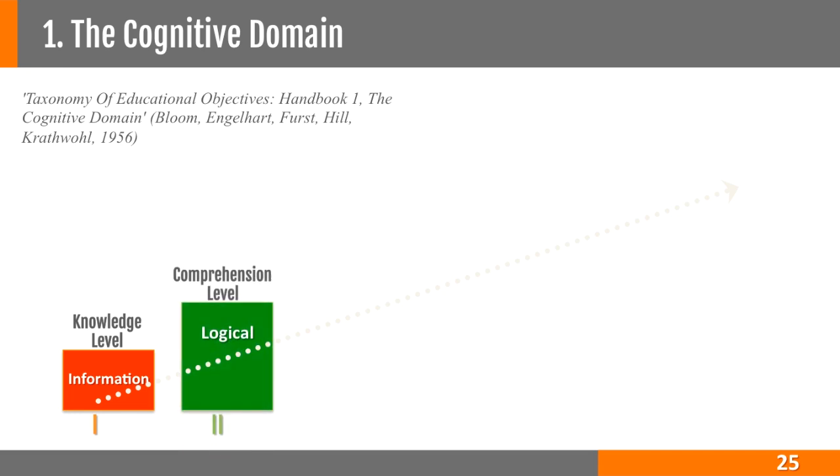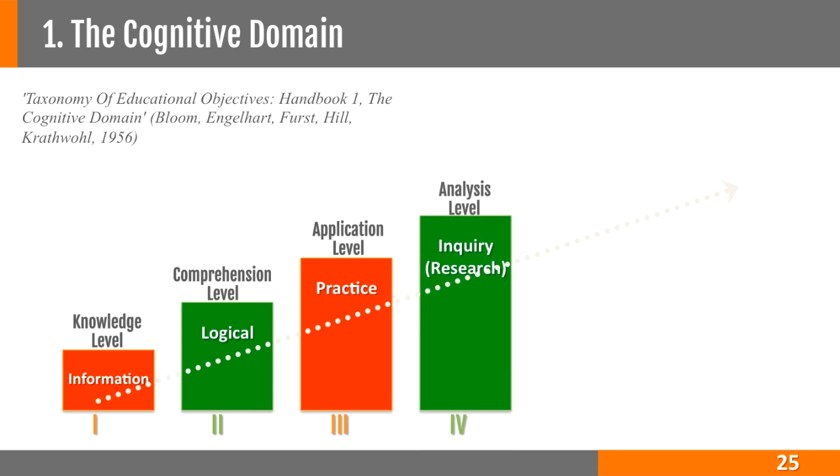The third level is application, that is the ability to apply knowledge in the real life situation. The fourth level is called analysis level, that is understanding how the knowledge is linked and organized with its various constituents and other subjects. It also provides critical thinking related to the causal factor or the critical success or failure factors of that subject matter.